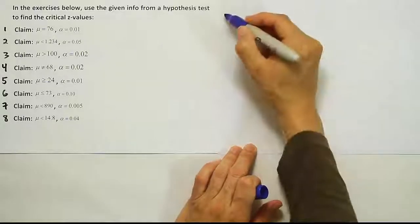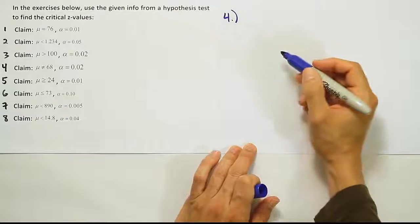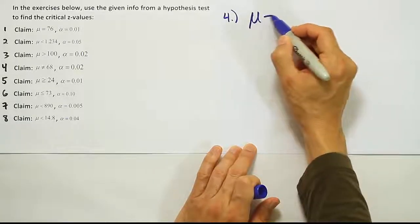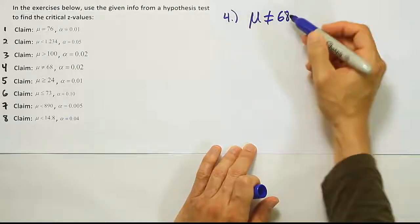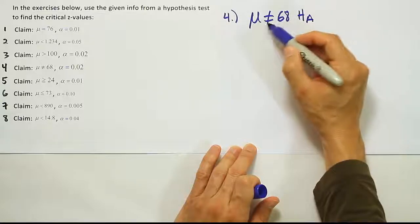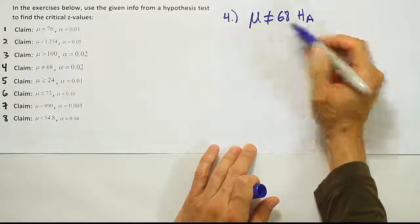Now we're looking at problem number four in our list. It says the claim is that the mean is not equal to 68. Remember, that makes our claim HA because it is one of those three symbols: less than, greater than, or not equal to.